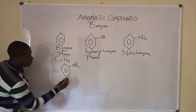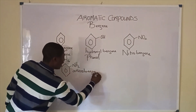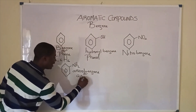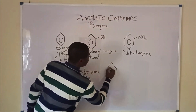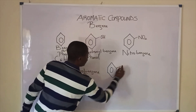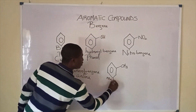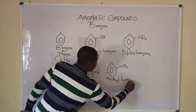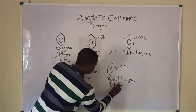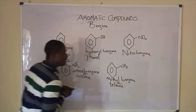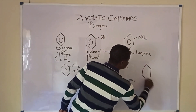This benzene derivative is called aminobenzene, and aminobenzene is also called aniline. This is another benzene derivative — a benzene structure attached to a CH3 group, which is called methylbenzene, also known as toluene.